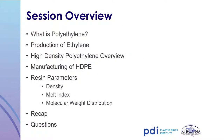In today's session we'll discuss the raw material polyethylene used to produce plastic drums and IBCs. Specifically, we'll discuss how polyethylene resin is produced, with an overview on high density polyethylene. Resin properties such as density, melt index, and molecular weight distribution will be explored.